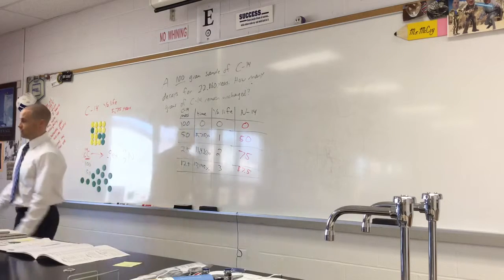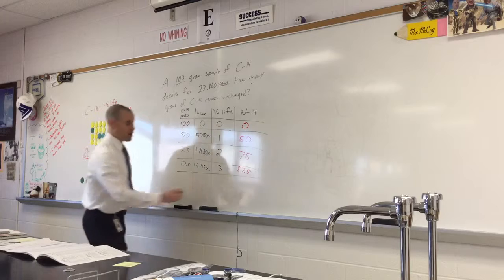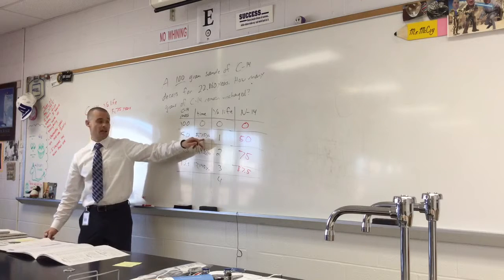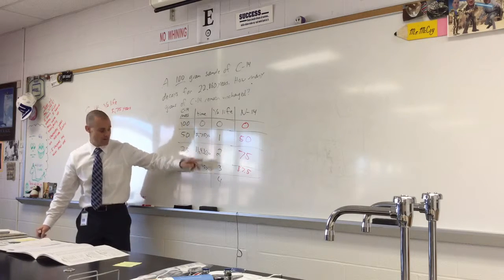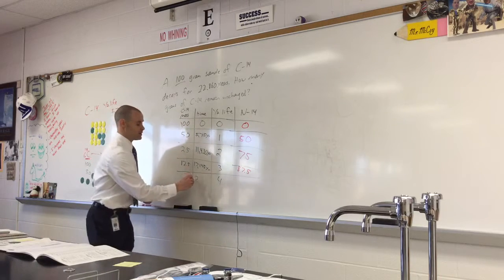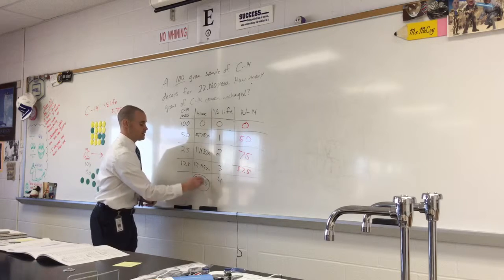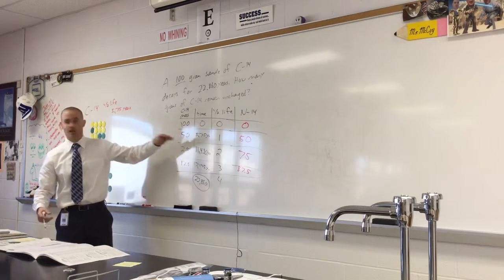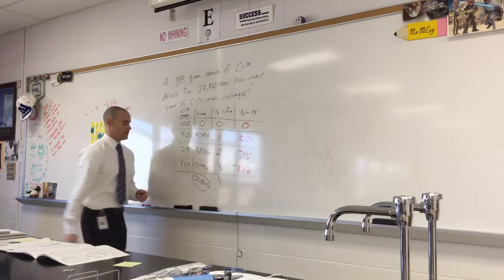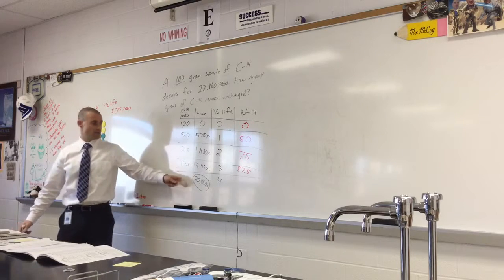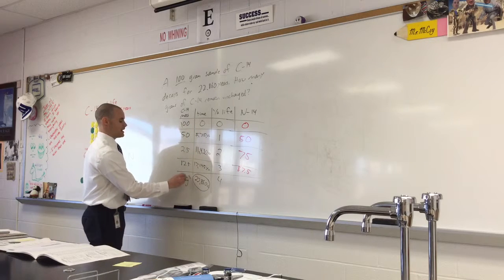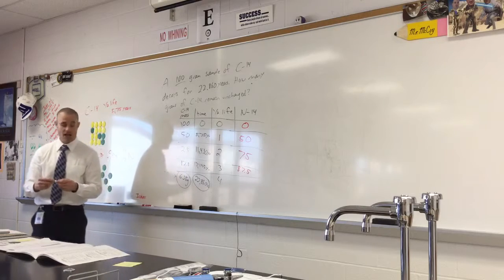Didn't we answer the question yet? No. We gotta go one more half-life. Here's why. Because four half-lives, 5,715, added to 5,715, added to 5,715, added to 5,715, is 22,860. So this last number here, that's when you know to stop filling in your chart when you reach the amount of time the question is asking for. Matty, what's the mass of carbon-14 remaining? 6.25 grams. And that is the answer to this question. 6.25 grams.